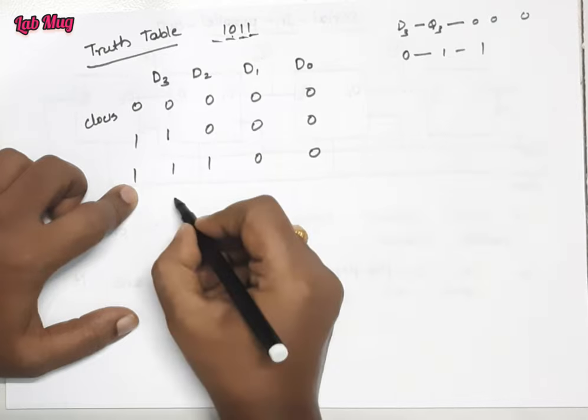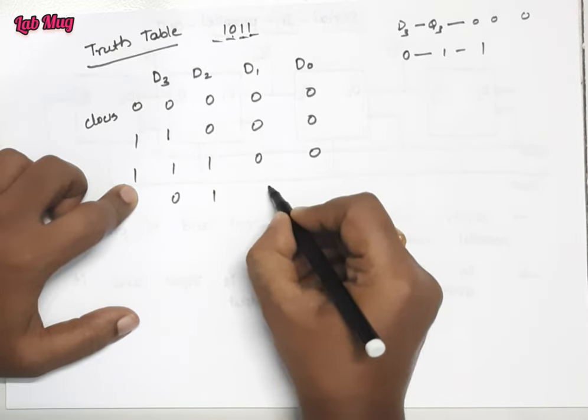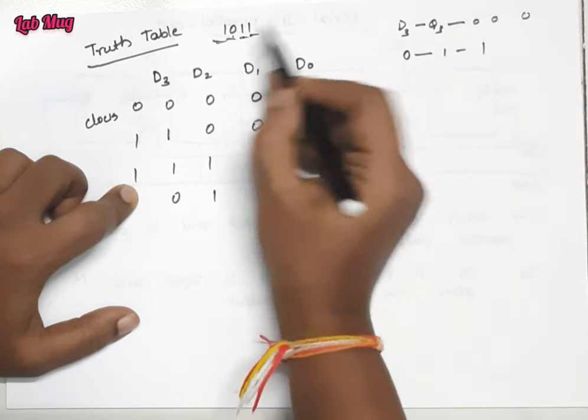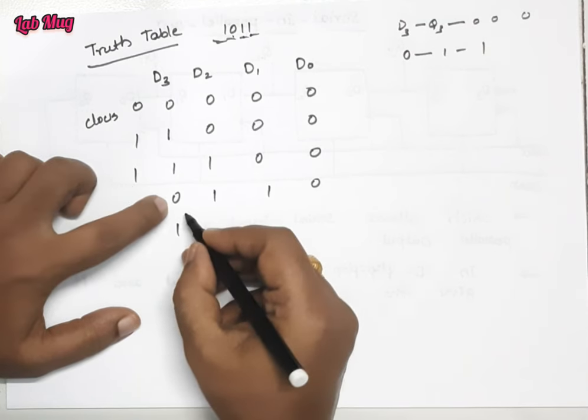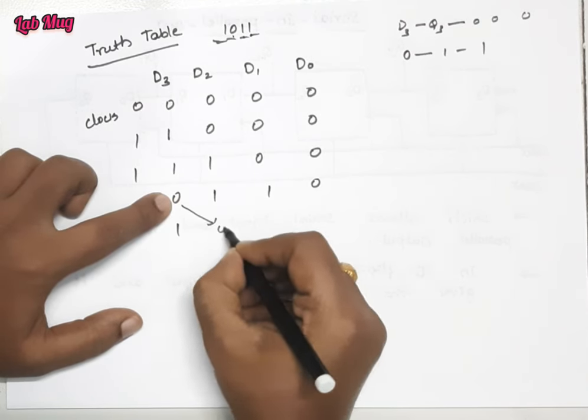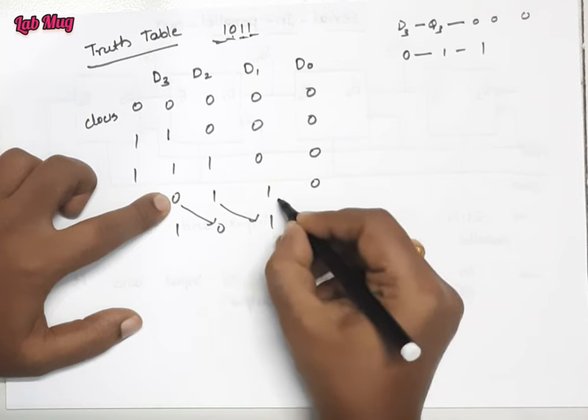So that is 0 1 1 0. And the last value we are passing, that is 1. This 0 is coming here, and this 1 is coming here, and this 1 is coming here.